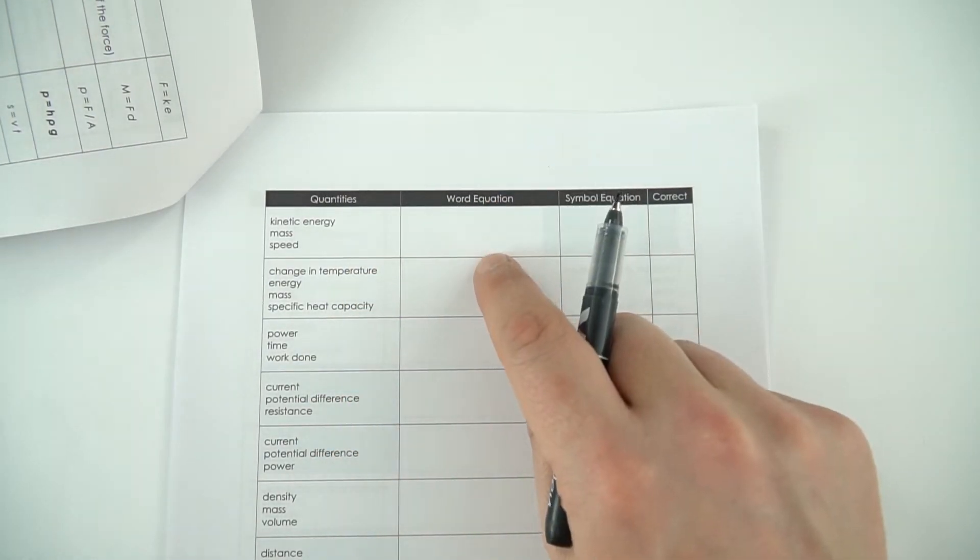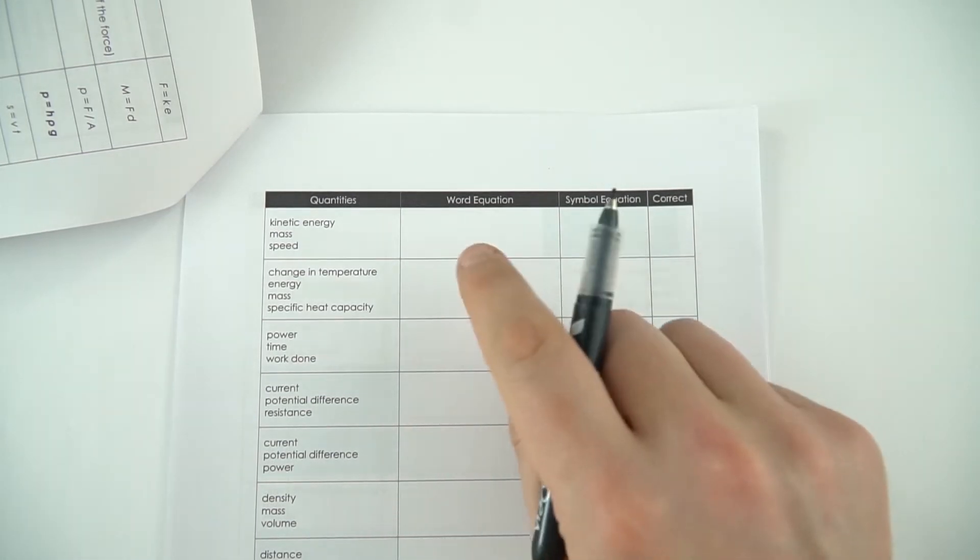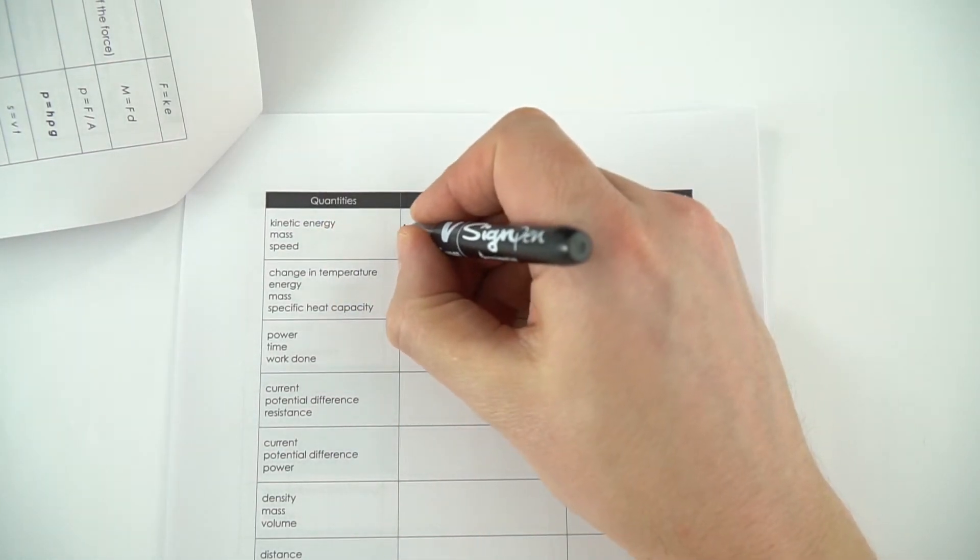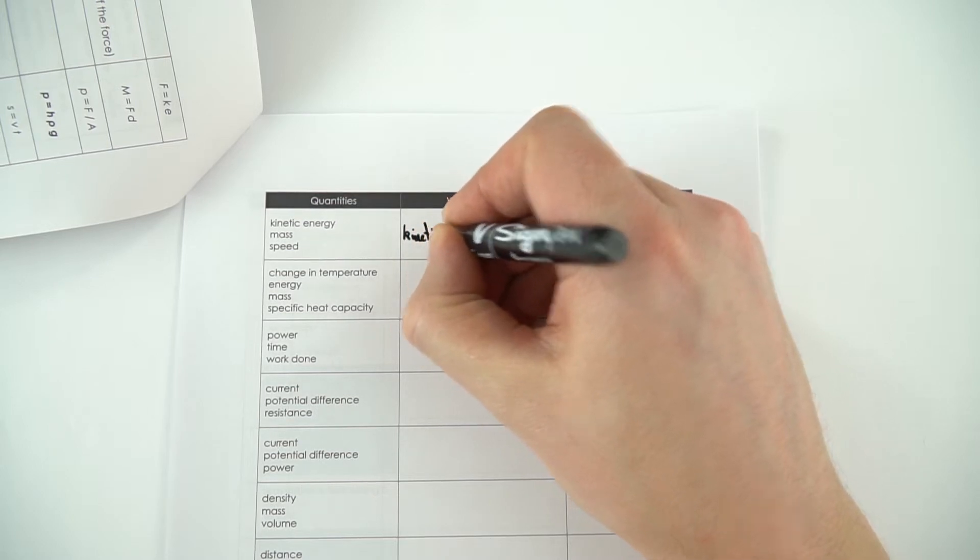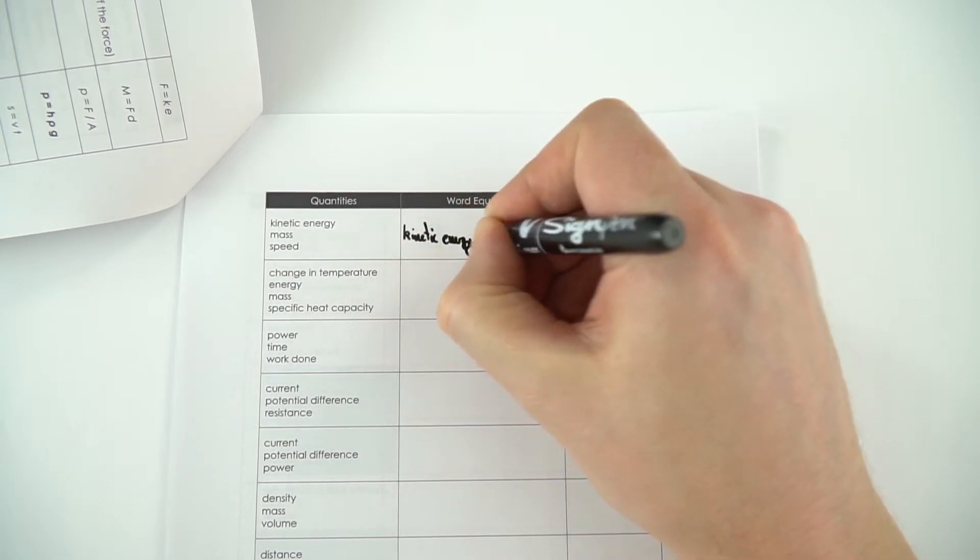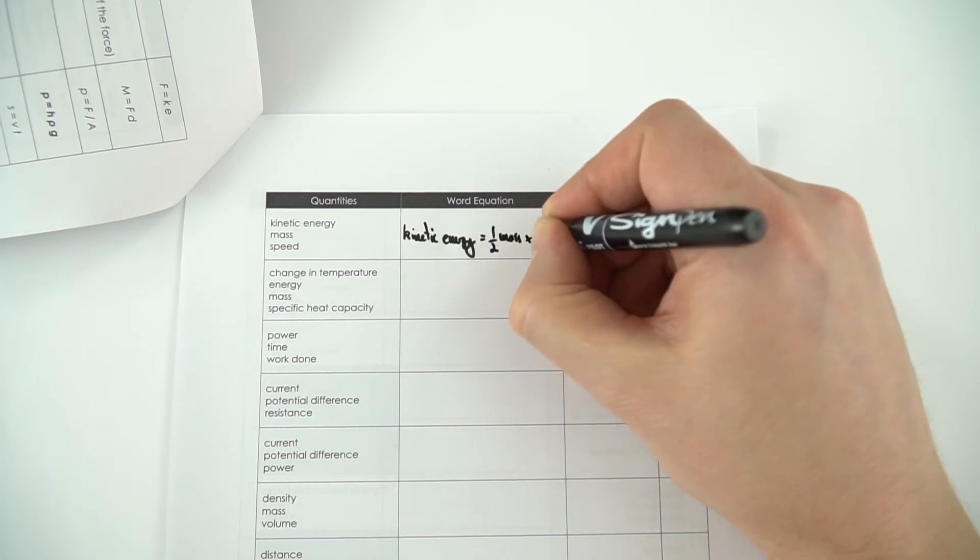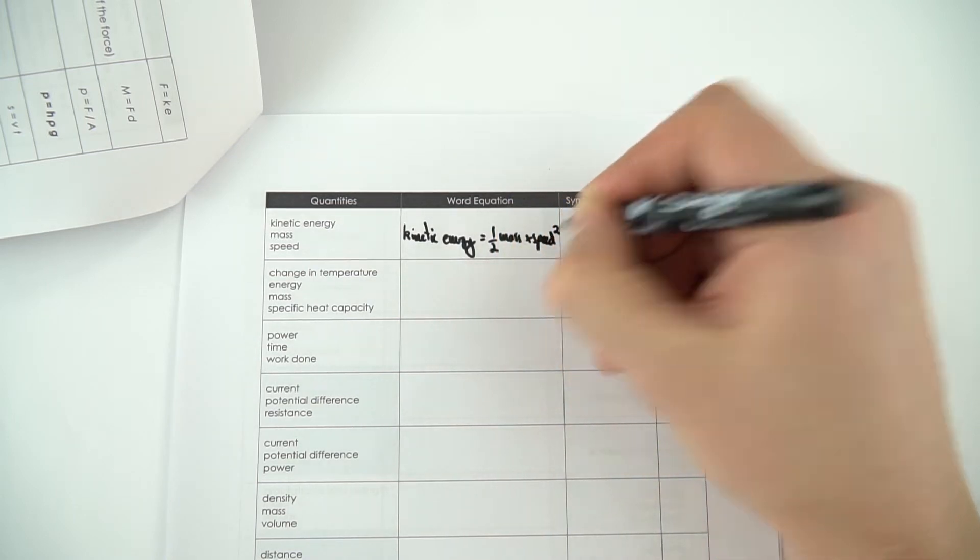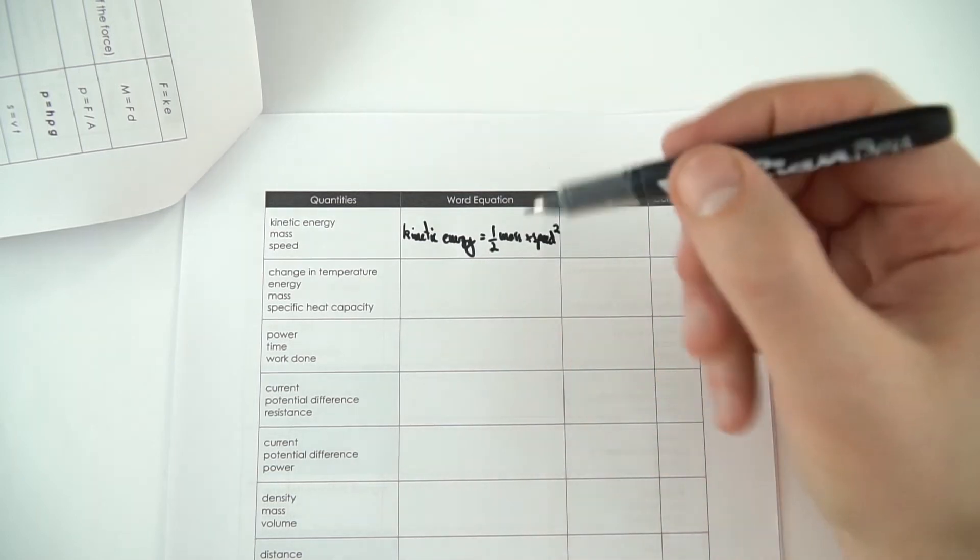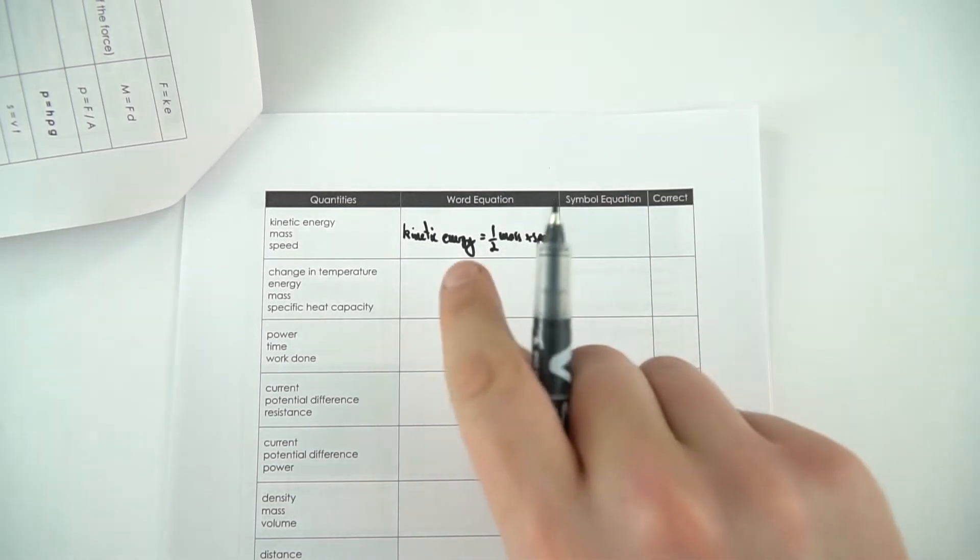You then need to write out from memory what the word equation is. Here we can say that kinetic energy is equal to a half times mass times speed squared. My writing's not great, this pen's a bit thick for this. So that's the equation.